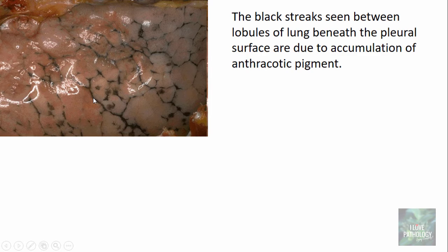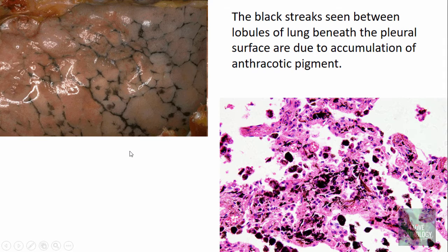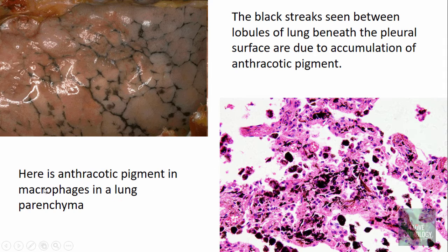In anthracosis, you can see black streaks in between the lobules of the lung beneath the pleural surface, due to accumulation of carbon — these are anthracotic pigments. Microscopically, these anthracotic pigments are seen within the macrophages in the lung parenchyma. The black pigment you are seeing is actually present within the macrophages.